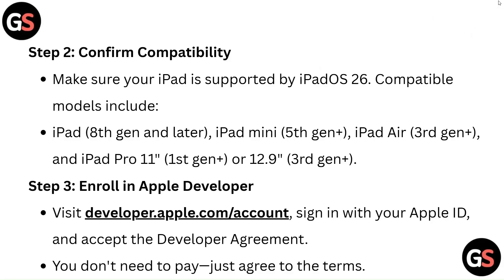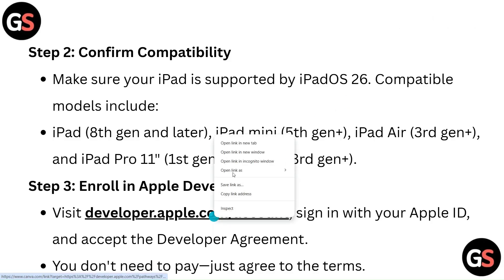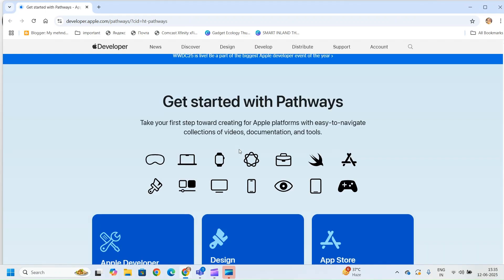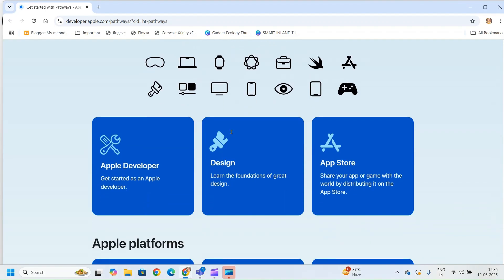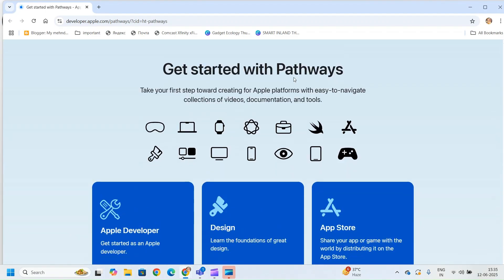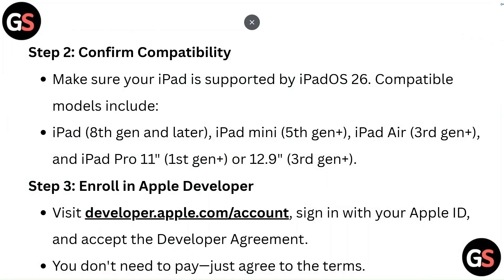Step 3: Enroll in Apple Developer. Visit developer.apple.com — the link will be provided in the description. When you click the link, a webpage will appear on your screen. From here, sign in with your Apple ID and accept the developer agreement. You don't need to pay, just agree to the terms.